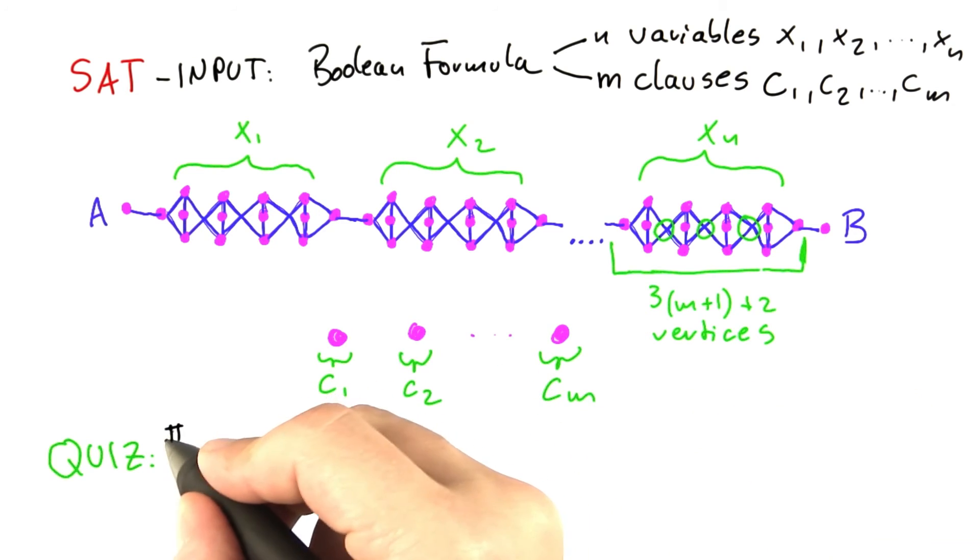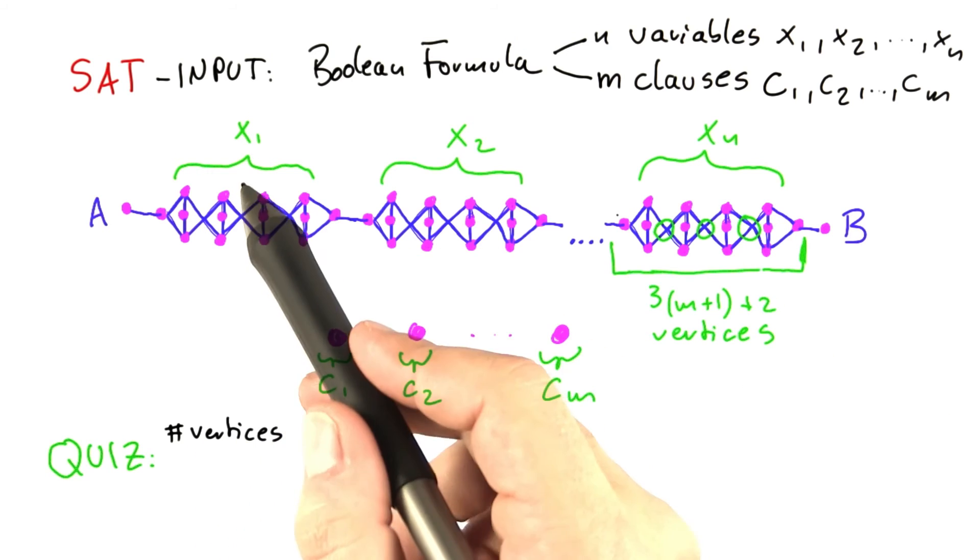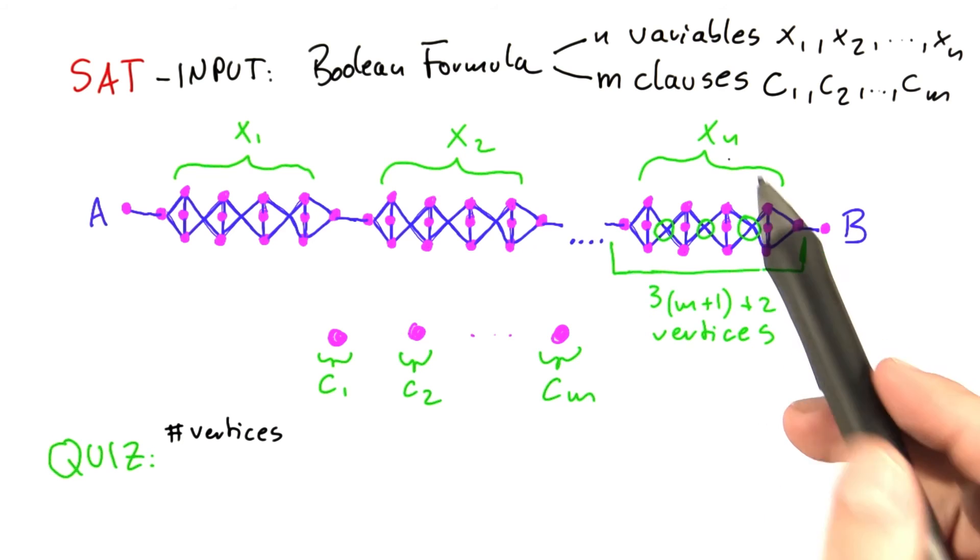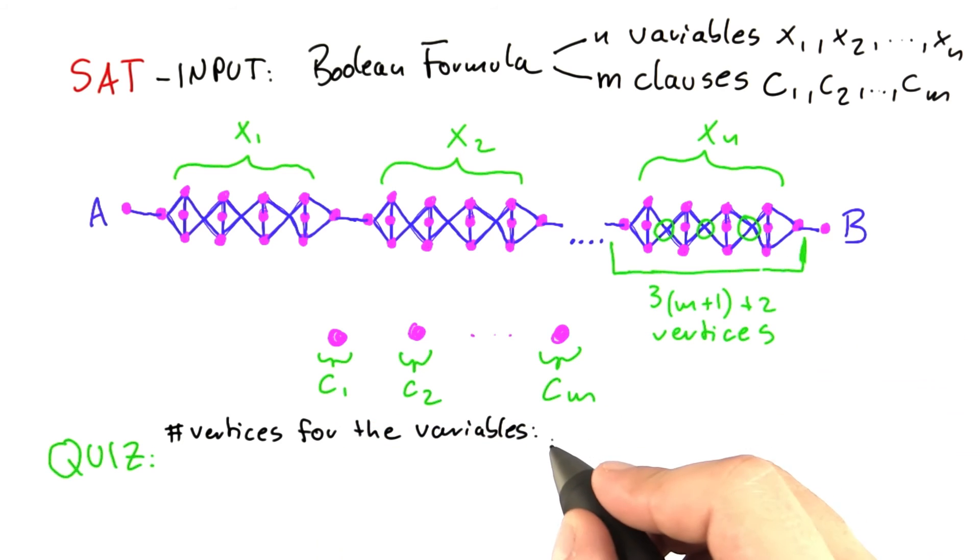So my first question for you is, how many vertices are we using to represent the variables? So to represent x1, x2, and so on until we get to xn. And I would like you to enter this as four numbers,